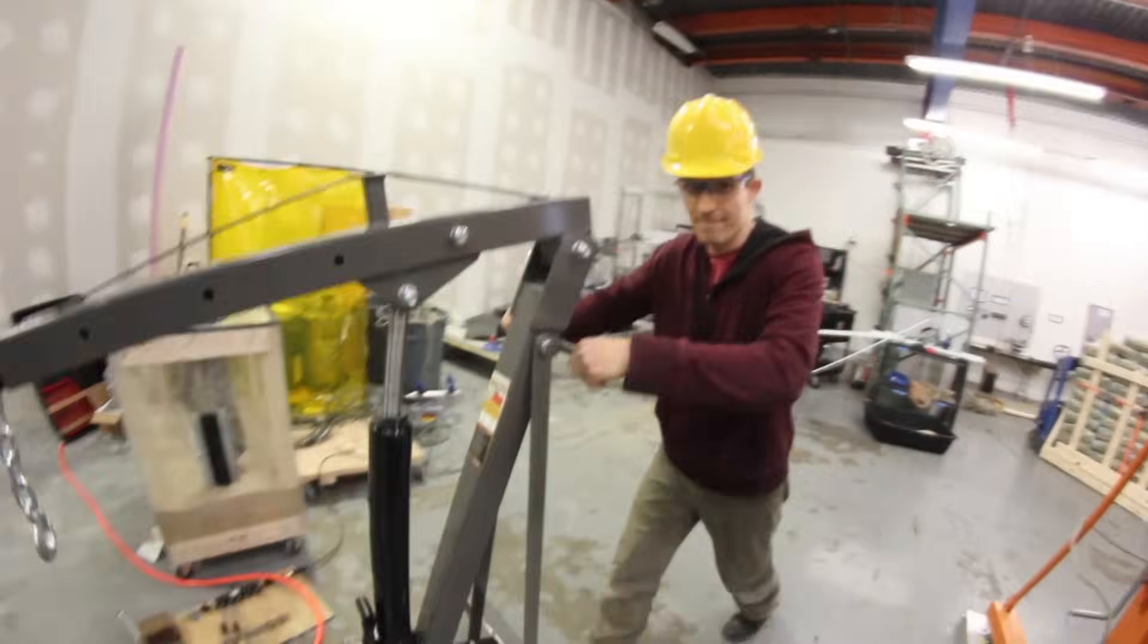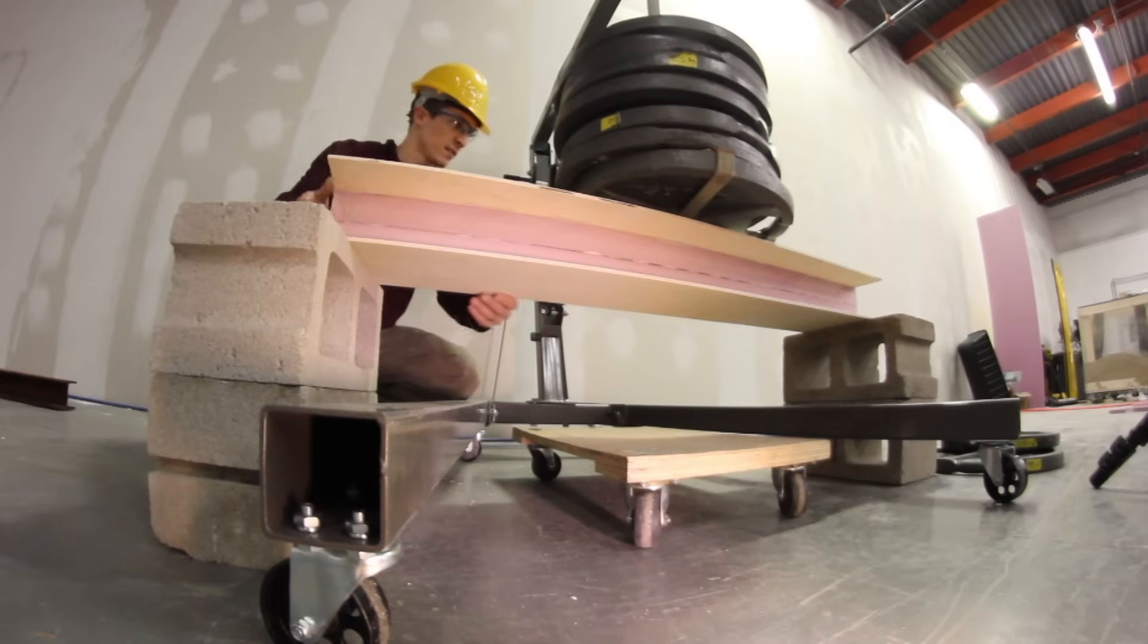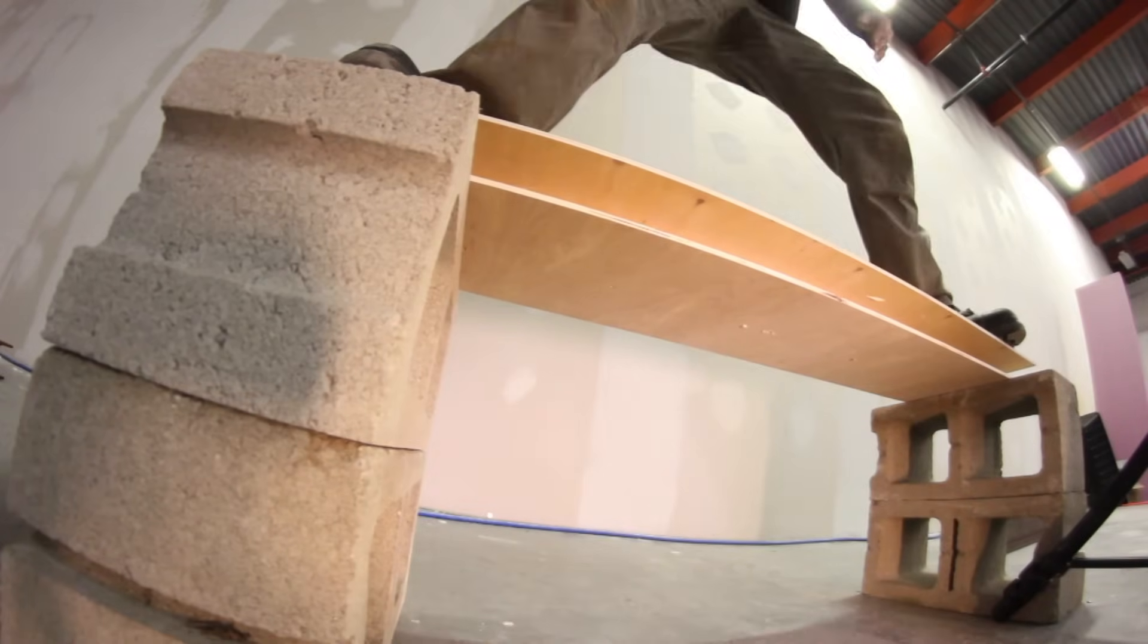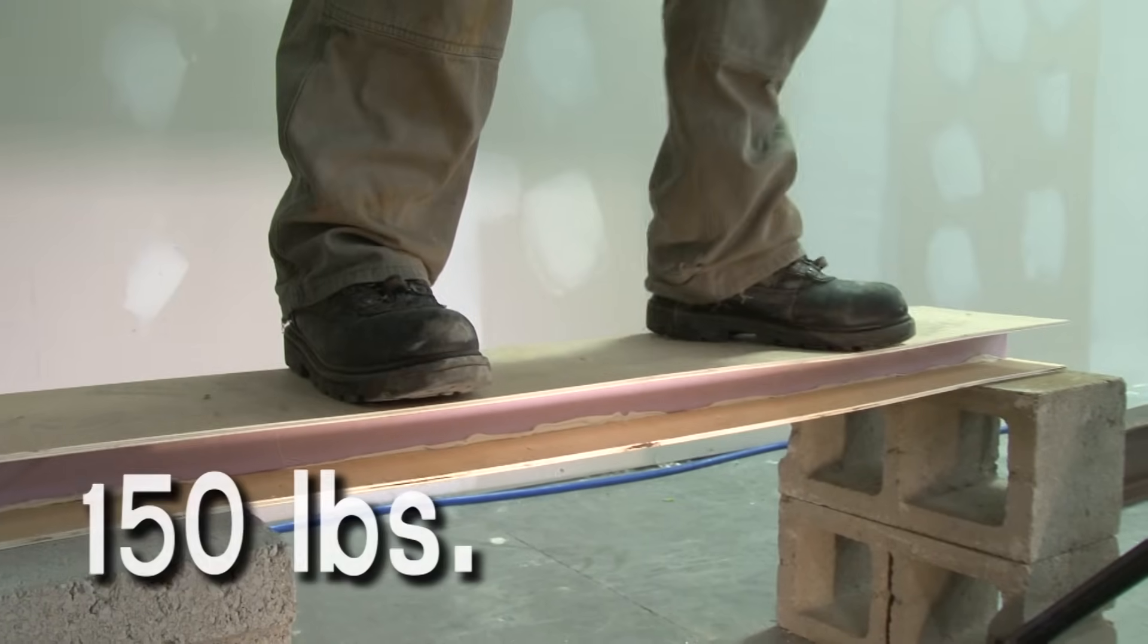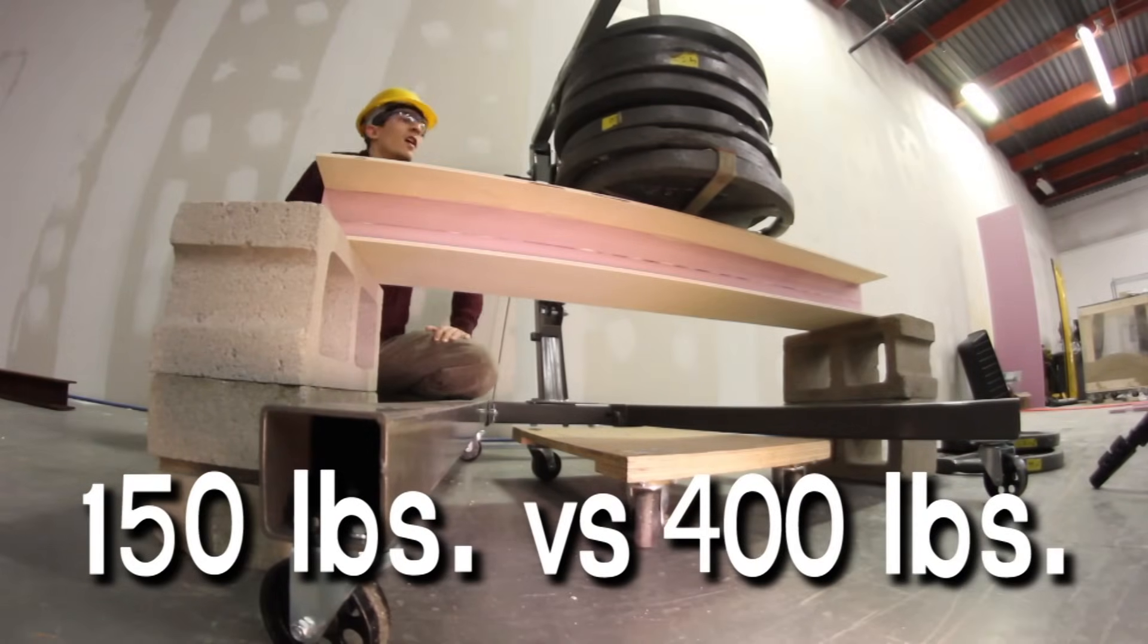I'm using a hydraulic engine hoist and a big stack of 45 pound weights. So remember before, we had the I-beam with the single layer of styrofoam, and that held my weight, which is a little over 150 pounds. We're about to see if this double size beam can hold 400 pounds.